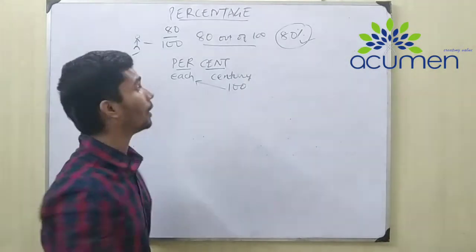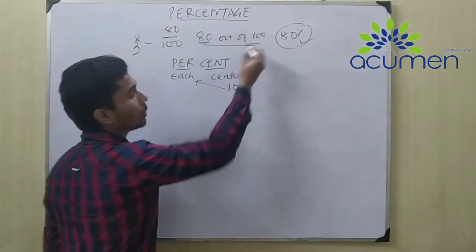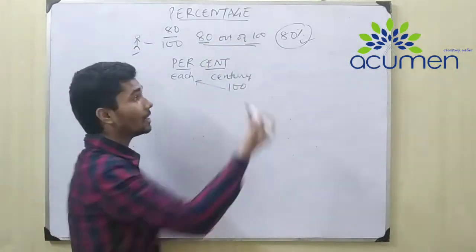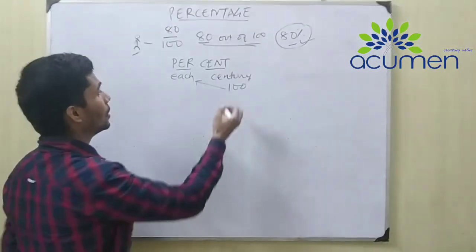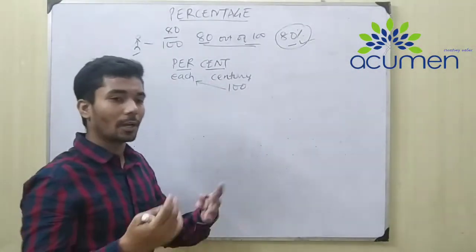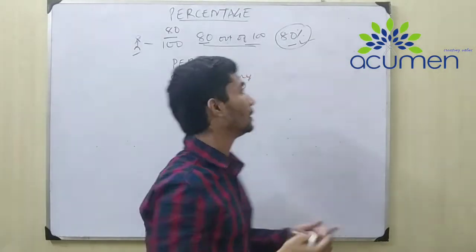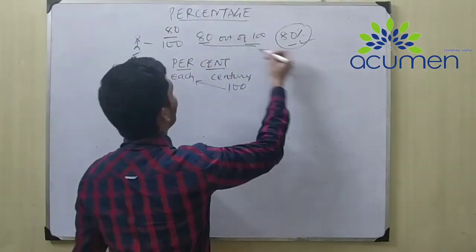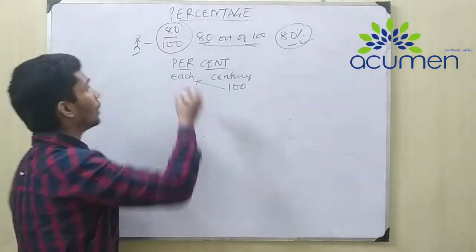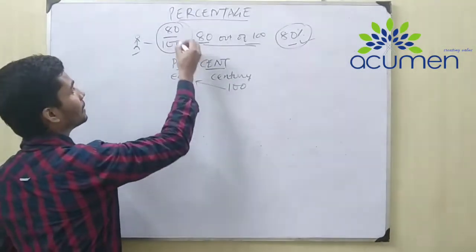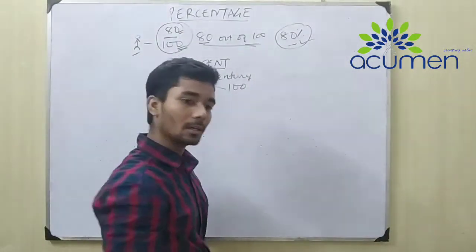Percentage means: for each hundred, how much have you got? So the student got 80 out of 100. You can write it as a fraction: 80 out of 100, meaning 80 upon 100. That is why his mom said he got 80%. So for each hundred, how much a person is getting — that is your percentage.